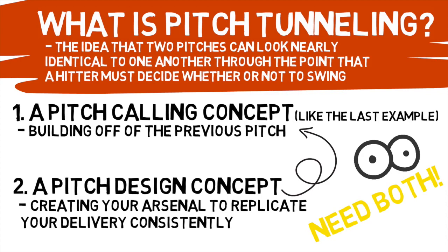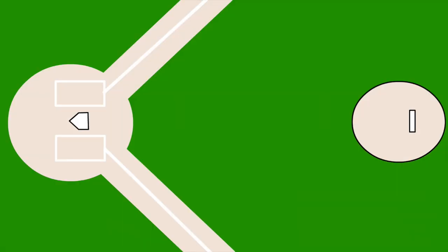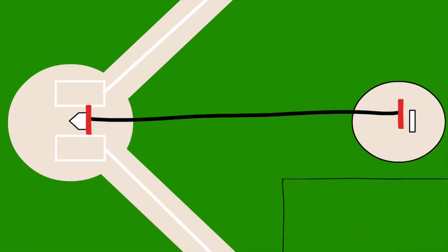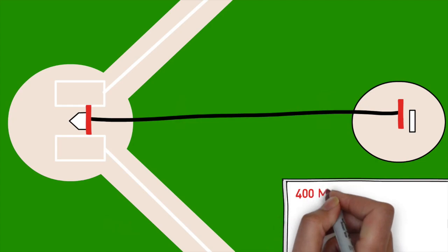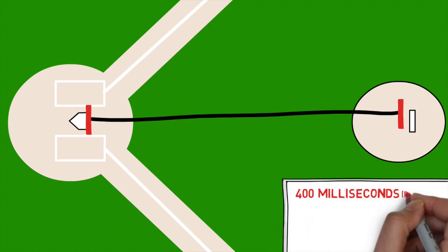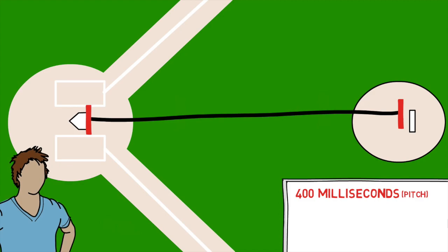So that's what pitch tunneling is, but why does it work? Let's dig into the math of the timing for each individual pitch. On average, the time it takes a ball traveling at 90 miles an hour to cross home plate from the pitcher's hand is about 400 milliseconds, or four thousandths of a second. That's pretty quick, and to put that into perspective, it takes you the exact same amount of time to blink.